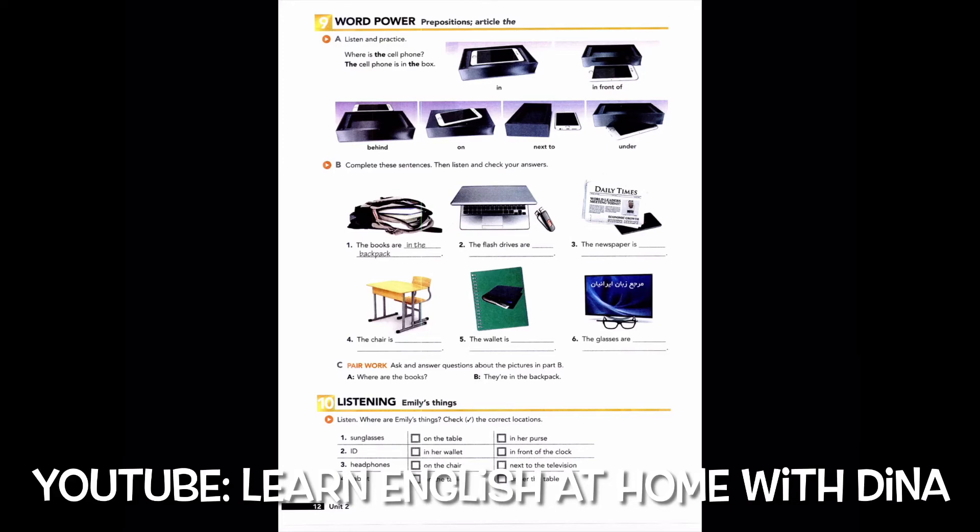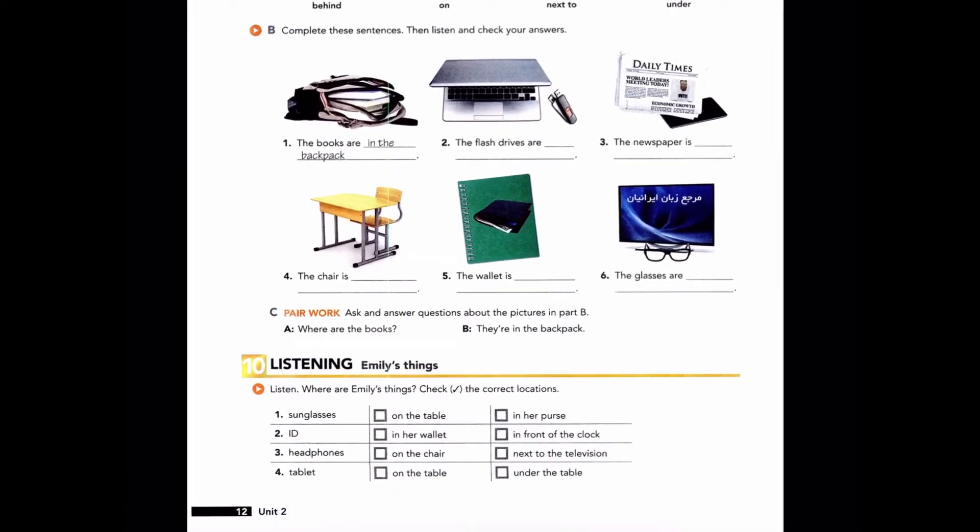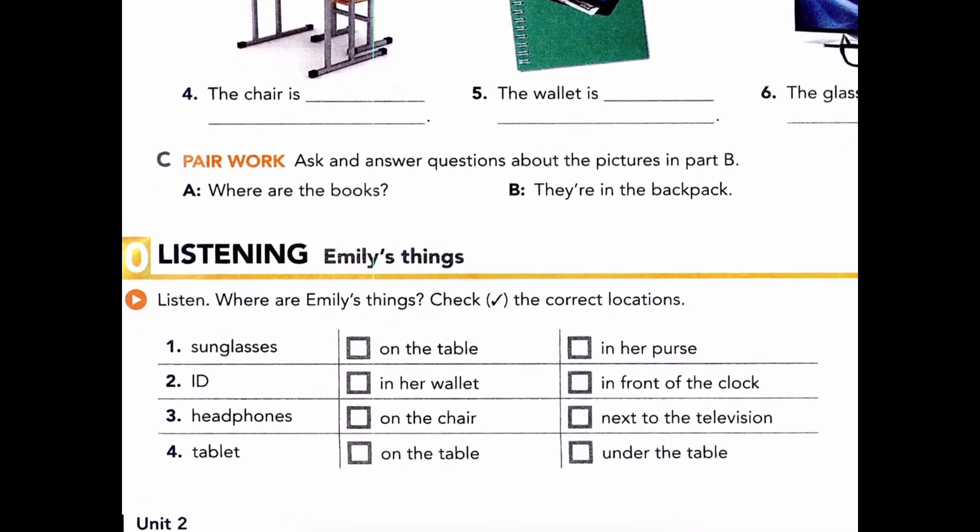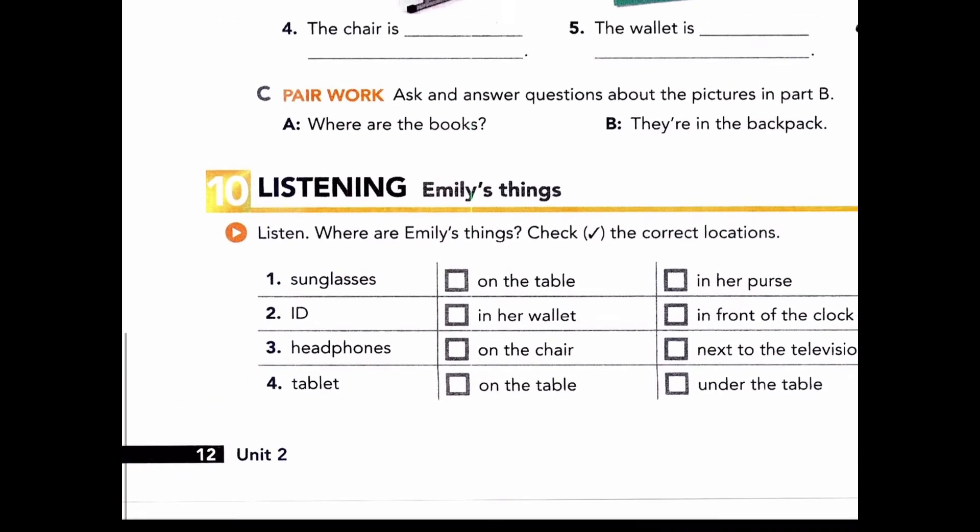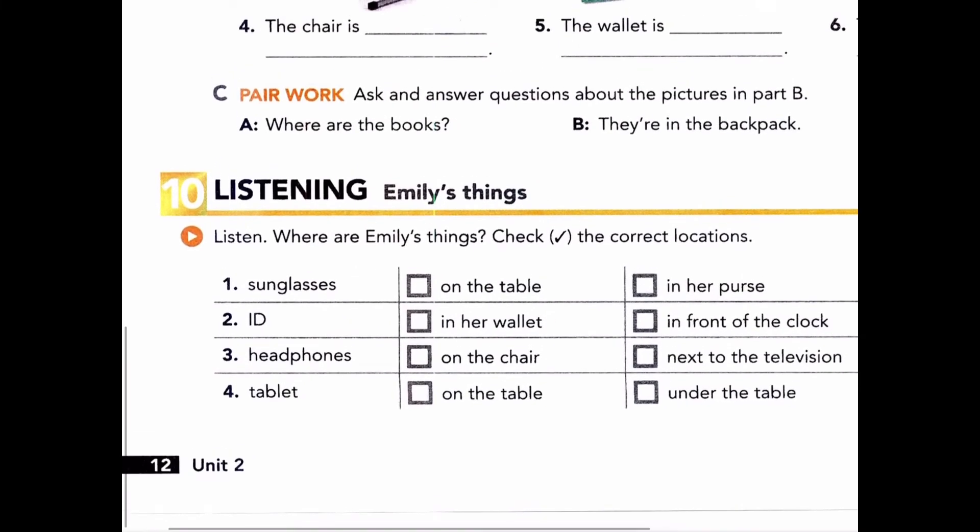Page 12, Exercise 10, Listening: Emily's Things. Listen, where are Emily's things? Check the correct locations. Where are my sunglasses? Are they on the table? No. Oh, here they are, in my purse. Now where's my ID? Hmm, it's not in my wallet. Where? There it is, in front of the clock.